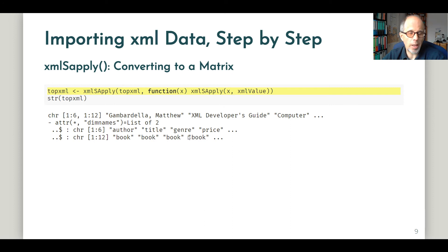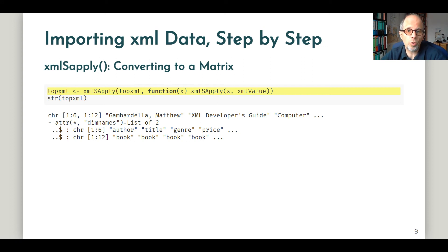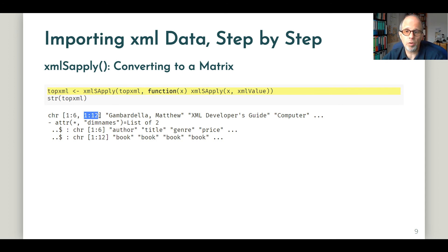Now I'm showing you the `xmlSApply` function. It's funny how the same ideas keep popping up in R in different topics and contexts, so it really makes sense to familiarize yourself with the apply family of functions — and here we have an XML-specific variant. The code may look a little bit dubious at first glance because the `xmlSApply` function appears twice: on the top level as the outside function, and then inside again in the anonymous function. You can use this code as a boilerplate if you have to work with data structures like this. Now we get a matrix back — it's a character matrix — with six rows and 12 columns. The six rows correspond to the six attributes or variables of our dataset, and the 12 columns correspond to the 12 books.